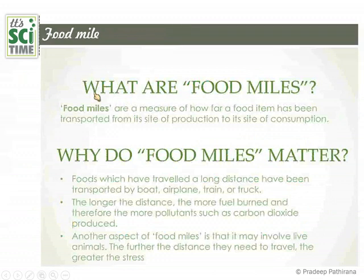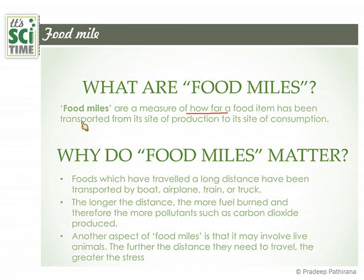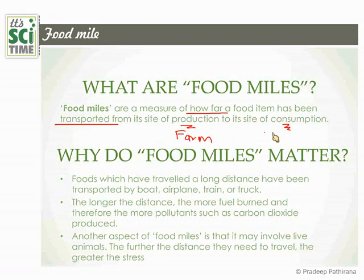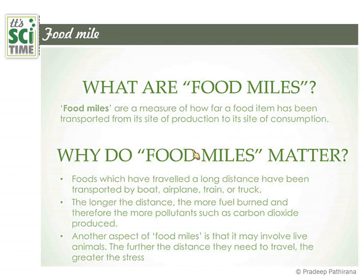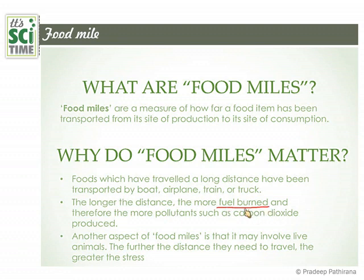Next: food miles. What are food miles? Food miles are a measure of how far a food item has been transported from the production place to the consumption place. If the production place is a farm and you consume it at your dining room, how far it traveled is the food mile. Why do food miles matter? Food which has traveled long distances has been transported by boat, airplane, and trucks. The longer the distance, the more fuel is burned, increasing the carbon footprint.